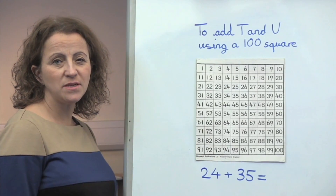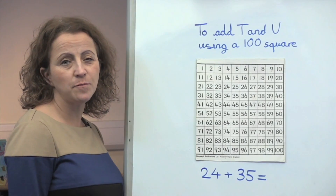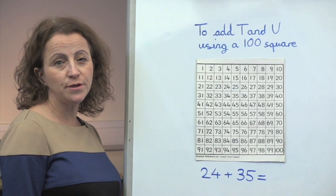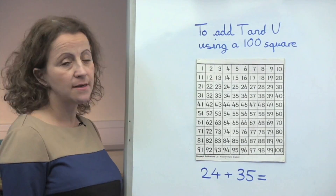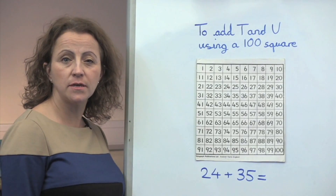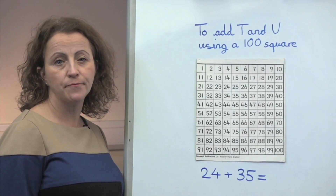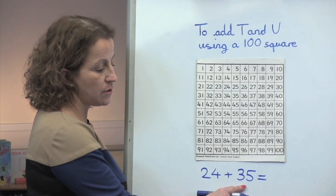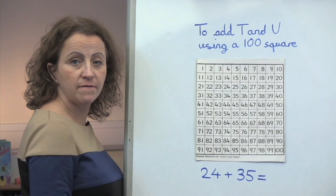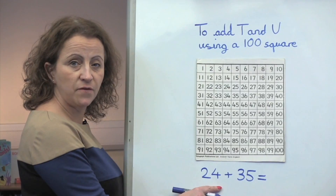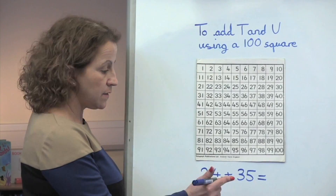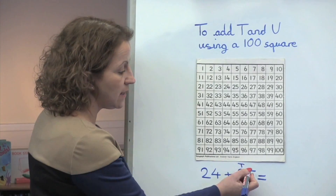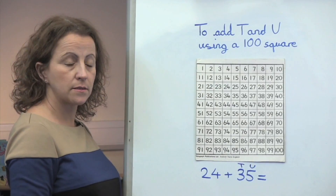Hello, this is Mrs. Hockey from St. Teresa's Catholic Primary School. Today we are going to add tens and units using a 100 square. 24 add 35. We start at 24, then we add 3 tens and then 5 units.